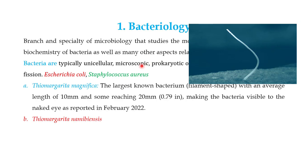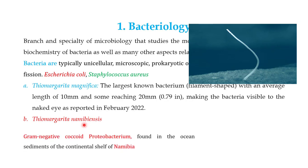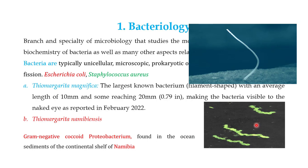Another important exception to the microscopic nature of bacteria is Thiomargarita namibiensis. It is a gram-negative coccoid proteobacterium found in the ocean sediments of the continental shelf of Namibia. This is an image of Thiomargarita namibiensis. These two are exceptions — most bacteria are microscopic, but these do not fall into that category.